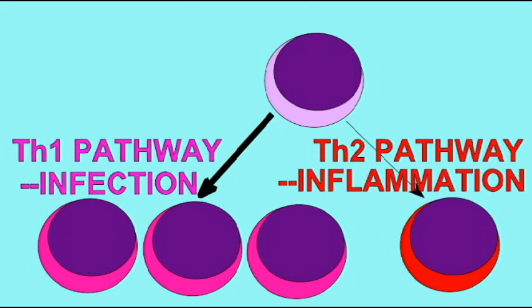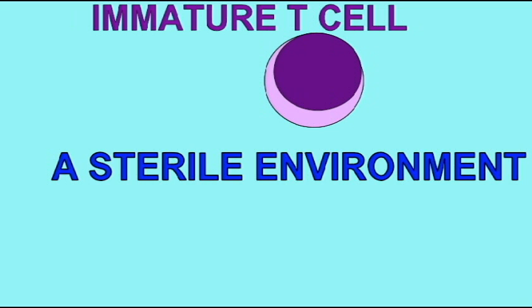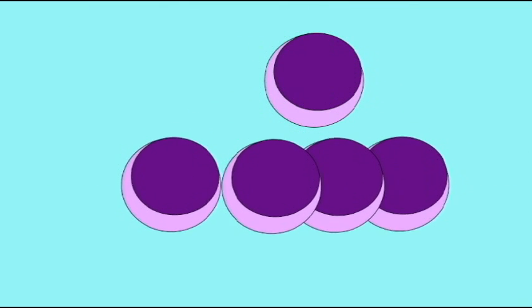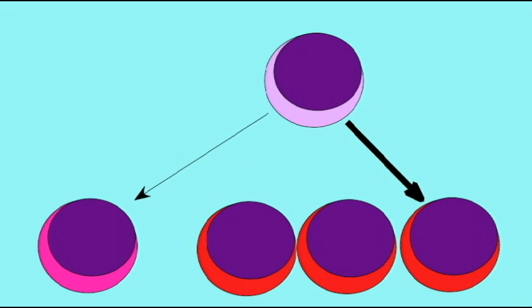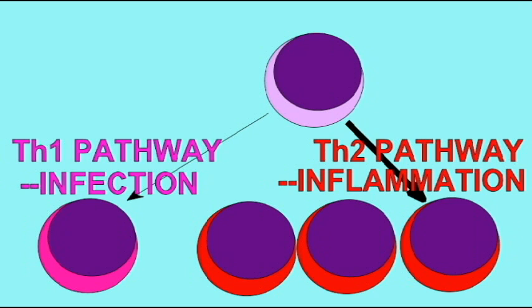Whereas a more sterile, germ-free environment, which perhaps is more of a modern condition, inflammation would then be an abnormal signal, which would allow the T-cells to develop in a pathway for inflammation and hypersensitivities, the TH2 pathway.